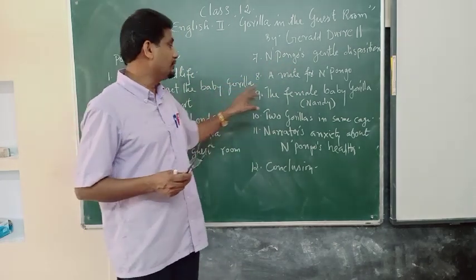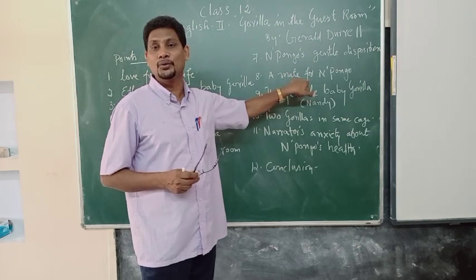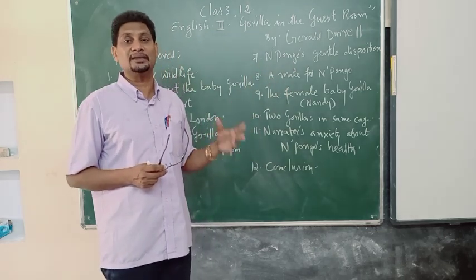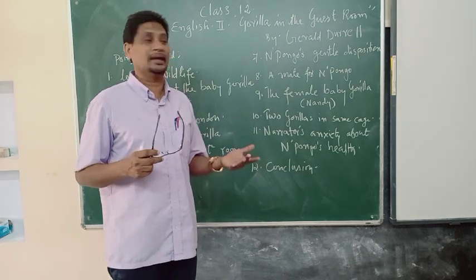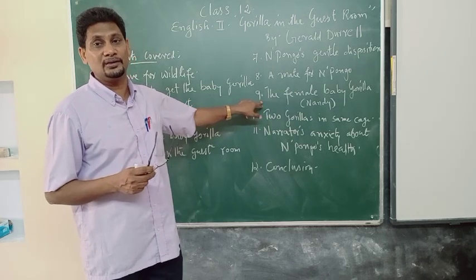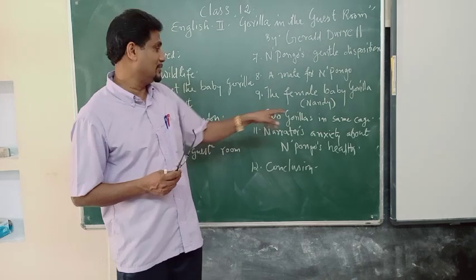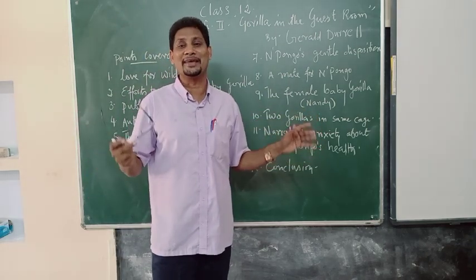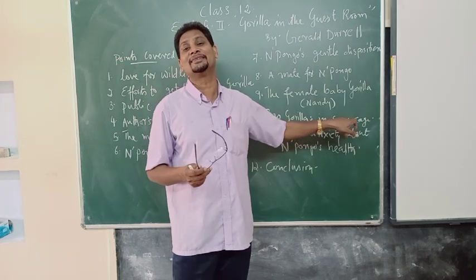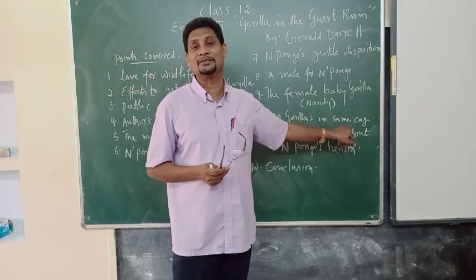Today in this class we will be focusing our attention on two points: first, a mate for Pongo — searching for a mate, because Durrell did not want these animals to become extinct. He tried to get a companion for Pongo, and finally he was successful. Her name is Nandy. Pongo and Nandy — two gorillas are put in the same cage.